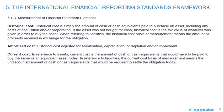Measurement of financial statement elements. Historical cost is the amount of cash or cash equivalents paid to purchase an asset, including costs of acquisition and preparation; if not bought for cash, it is the fair value of what was given. For liabilities, historical cost means the amount of proceeds received in exchange for the obligation. Amortized cost is historical cost adjusted for amortization, depreciation, depletion, and/or impairment. Current cost for assets is the cash that would be paid to buy the same or equivalent asset today; for liabilities, it is the undiscounted amount required to settle the obligation today.